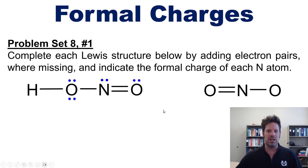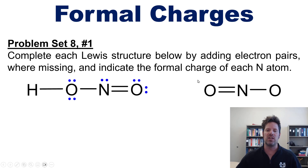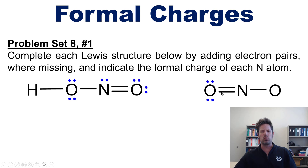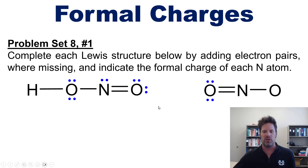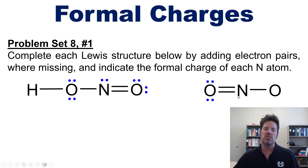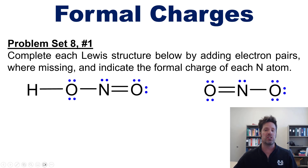For the molecule on the right, the oxygen on the left needs two lone pairs to complete its octet. The placement of lone pairs doesn't matter as long as the octet is fulfilled. The central nitrogen needs one lone pair to complete its octet, and the oxygen on the right needs three lone pairs. That completes the first half of this question — adding all the required lone pairs to fulfill each atom's octet.